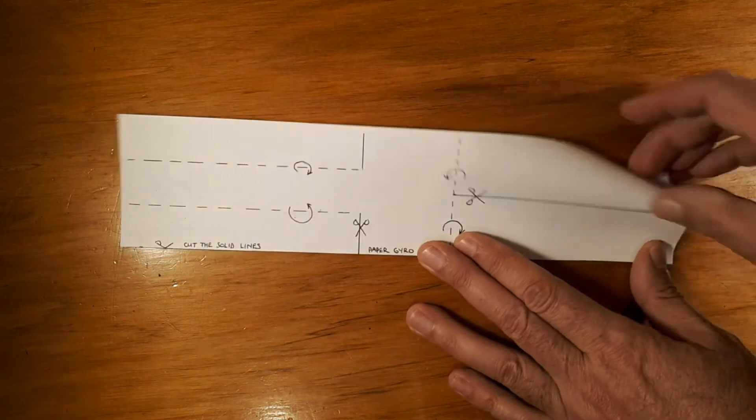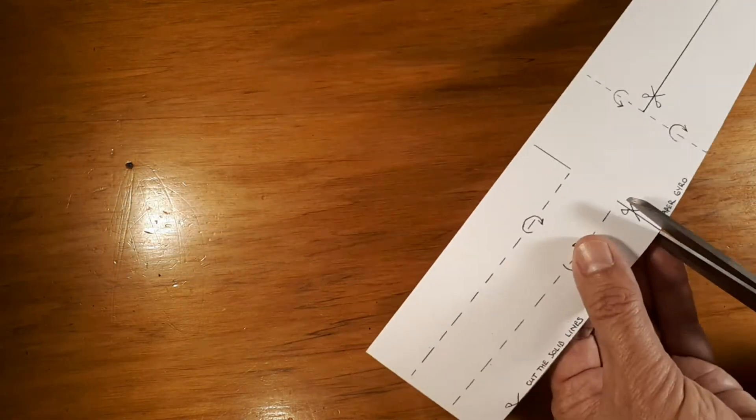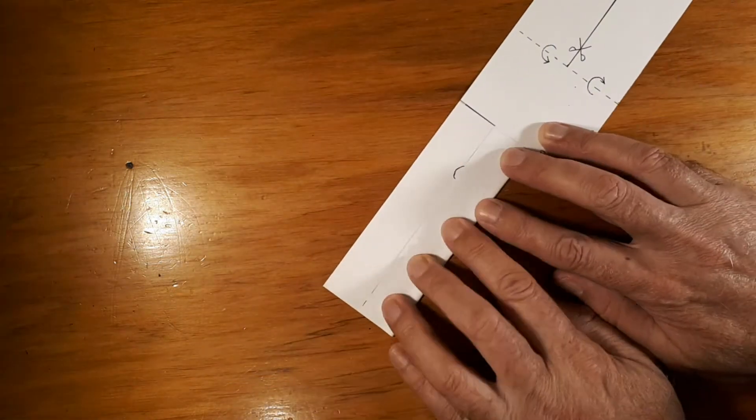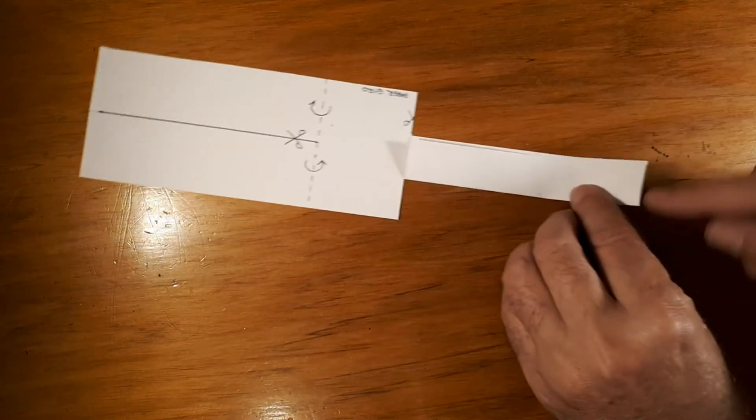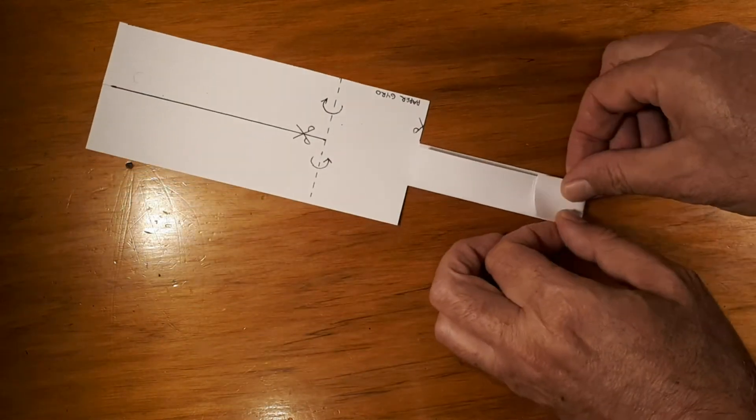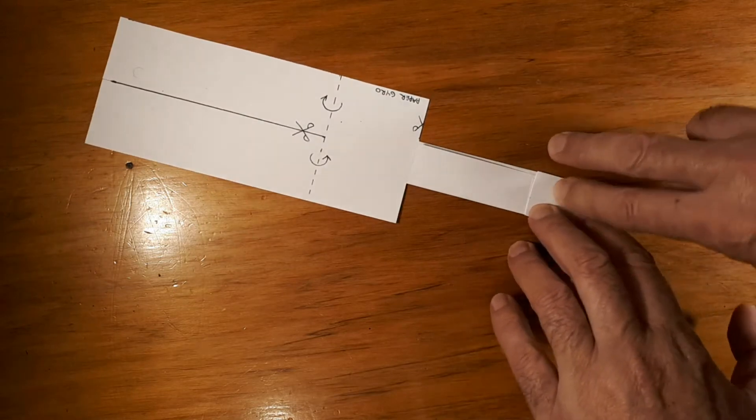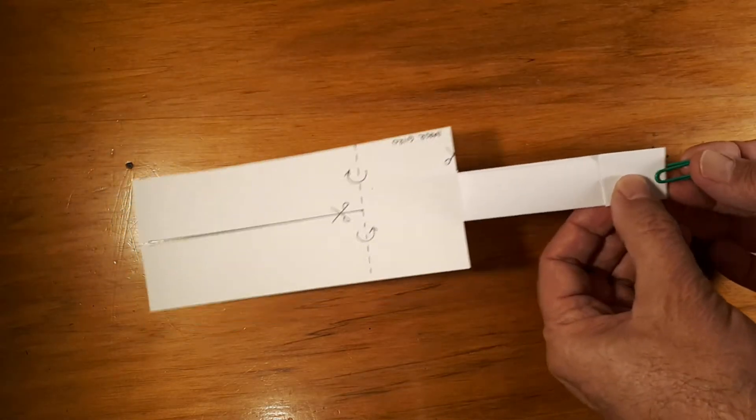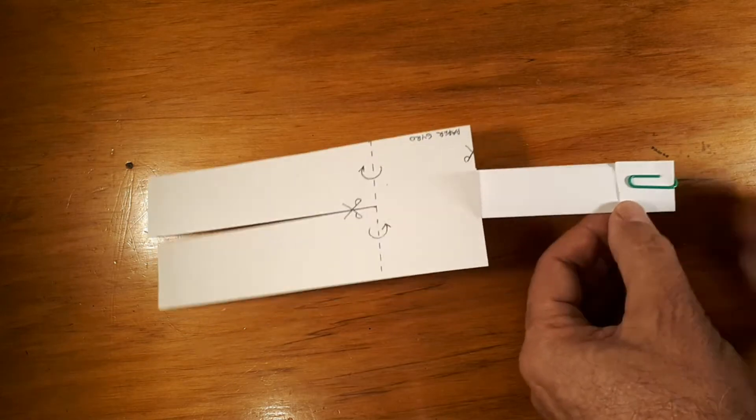So next cut straight down there. And one that isn't mentioned on the piece of paper is just to fold this down here, give this a bit more weight towards the bottom and put a paper clip on there and the bottom of your gyro is already done.